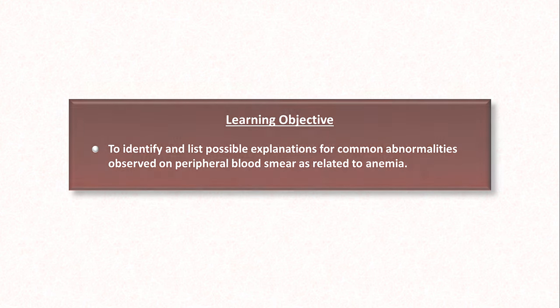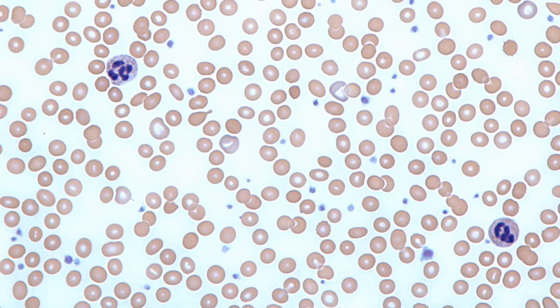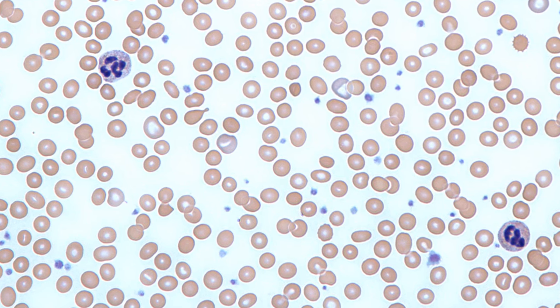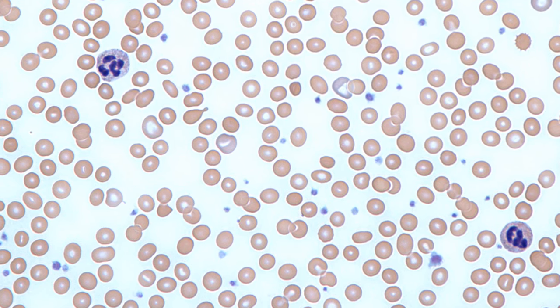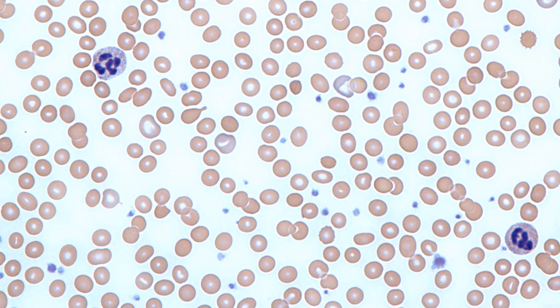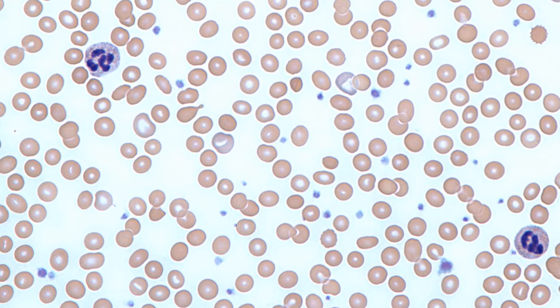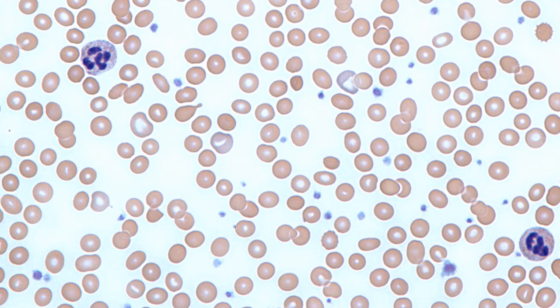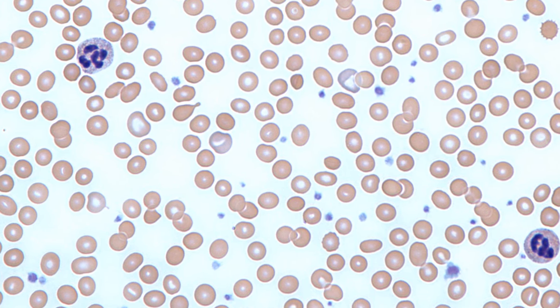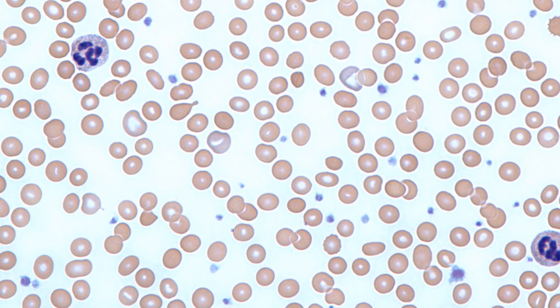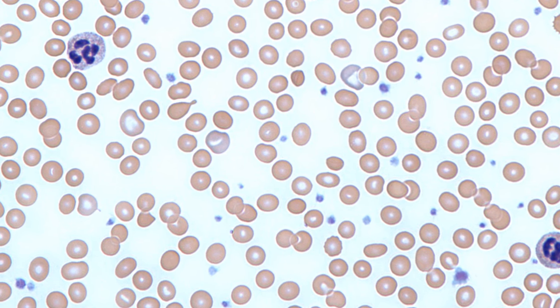When working up anemia, after the MCV and reticulocyte count, the next most useful test is the blood smear, where the patient's whole blood is smeared across a glass slide, stained and dried, and then examined under a microscope. Sometimes the blood smear will show a pathognomonic finding that's diagnostic of something very specific, and sometimes it demonstrates a finding that points towards a specific category of disease. I'm going to review some of the more common findings.